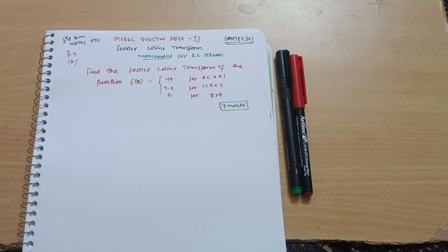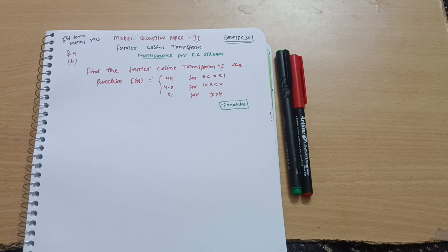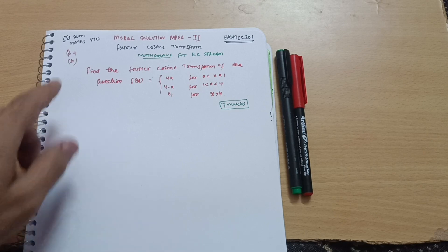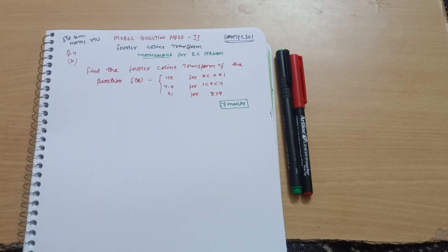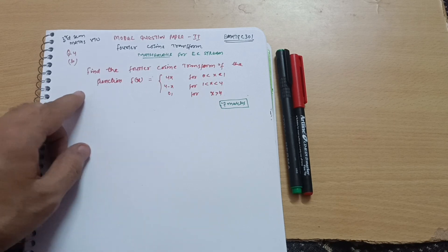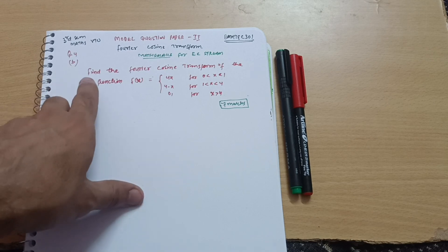Hello my dear friends, welcome back again. Hope you are all doing well. We are discussing the model question papers. Today I will discuss model question paper set number 2, question number 4b. As in the earlier video I discussed question number 4b of model question paper set 1 — that was on the Fourier cosine transform — and in this question we are supposed to calculate only the Fourier cosine transform.